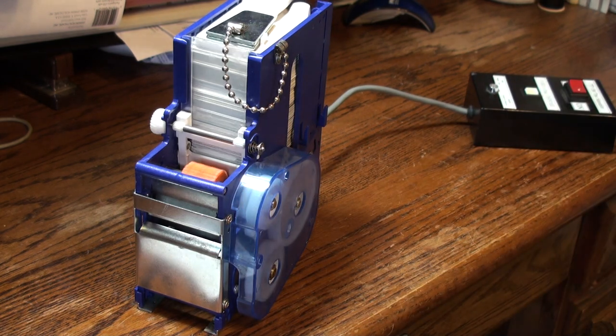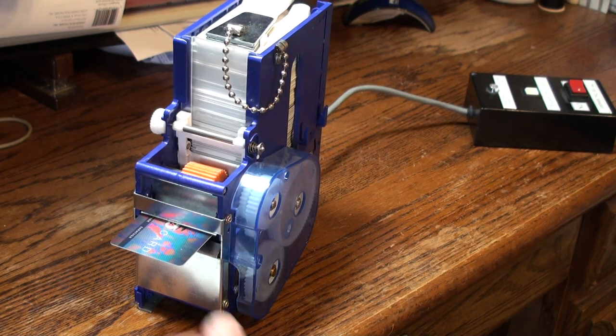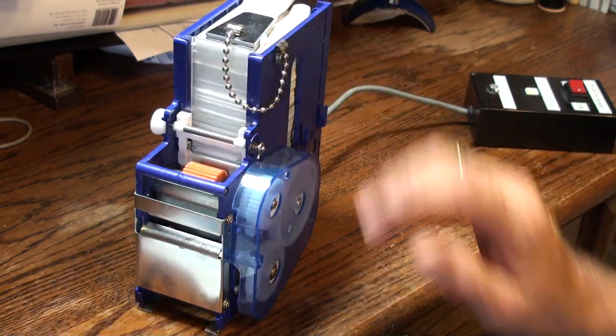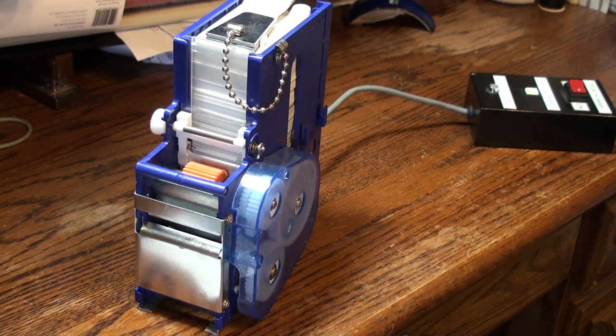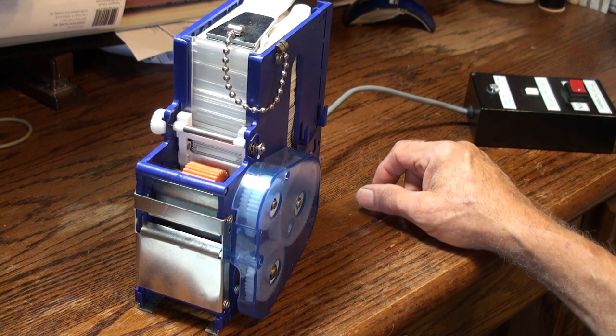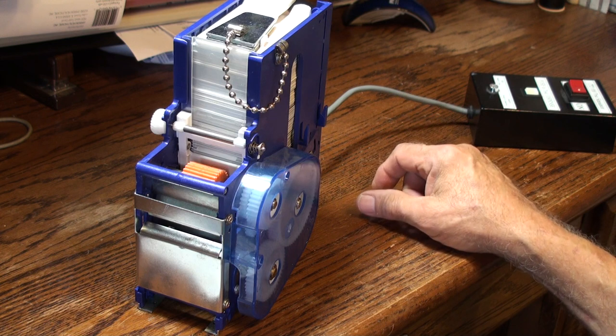So when we press the button, we dispense out a card and hold it until we pull it out. So I pull out my card. It reloads the next card. It'll dispense approximately about a card per second if you want it to go one and back or the other.